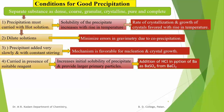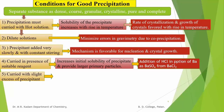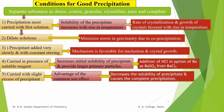For example, in the precipitation of BaSO4 from the barium chloride solution, HCl is added. This HCl increases the initial solubility of the barium sulfate. The fifth condition is that precipitation should be carried out with a light to moderate excess of the precipitant. The advantage is the common ion effect, which decreases the solubility of the precipitate and causes complete precipitation at the end of the precipitation.